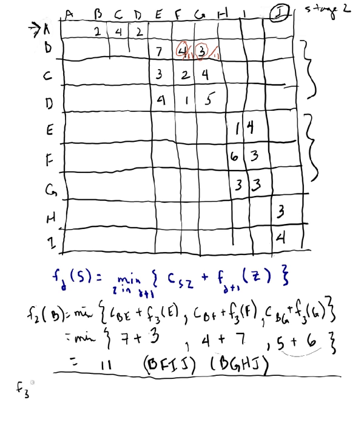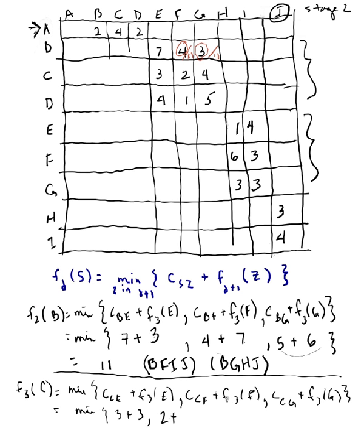Okay, let's look at my next S, F3 of C is the min, the cost from C to E plus F3 of E, the cost from C to F plus F3 of F. C to F is the min of C to E is 3, plus F3 of E is 3, C to F is 2, plus F3 of F is 7, C to G is 4, and F3, plus F3 of F is 6, so that's 6, 9, C to G, C, E goes 6.